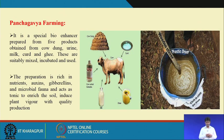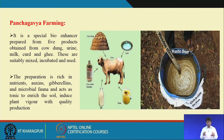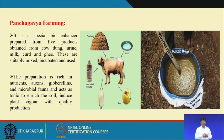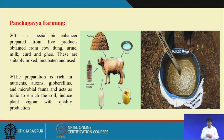The panchagavya preparation is rich in nutrients, auxins, gibberellins and microbial fauna, and acts as a tonic to enrich the soil and induce plant vigour with quality production. The five components — dung, urine, milk, curd and ghee — are mixed in suitable proportions, incubated, then sprayed over the crop canopy or applied to the soil as fertilizer and pest control, enhancing soil fertility and providing growth hormones and enzymes.